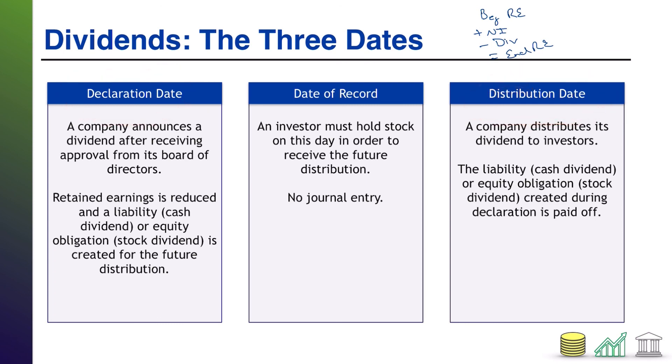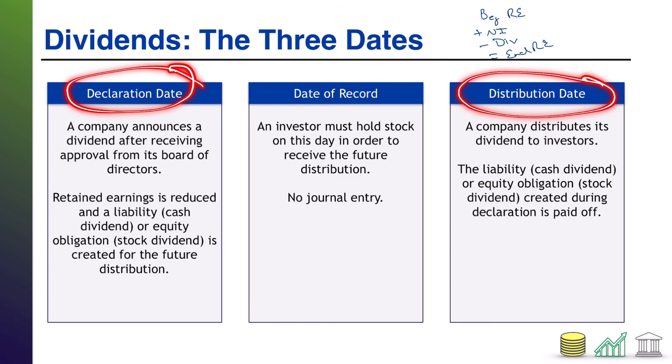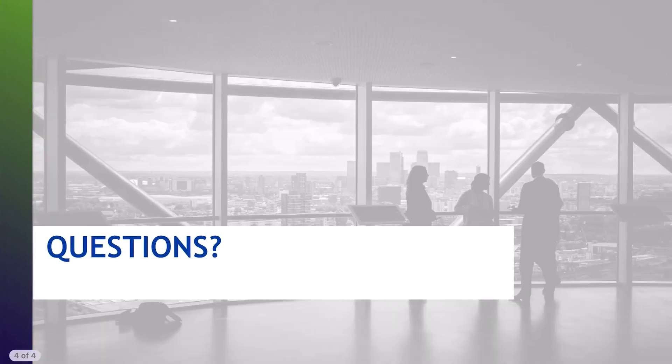So there are your three D's — but only two matter for accounting purposes. It really is fairly simple: reduce retained earnings, create an obligation, reduce the obligation, pay out in whatever form you're paying. That's it for the general overview. Depending on the specific circumstances of any one dividend, there will be additional nuances, but this is the general rule of thumb that applies to all of them. I hope you found this helpful — thank you.